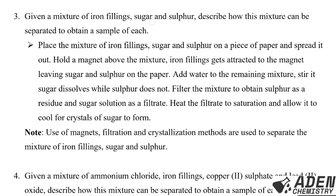Question number three: given a mixture of iron filings, sugar, and sulfur, describe how this mixture can be separated to obtain a sample of each. Iron filings are magnetic while sulfur and sugar are non-magnetic. We use a magnet to remove the iron filings. Then we add water so that sugar dissolves to form sugar solution while sulfur does not. We then use filtration to remove sulfur as a residue and collect sugar solution as the filtrate, then evaporate to obtain sugar crystals.